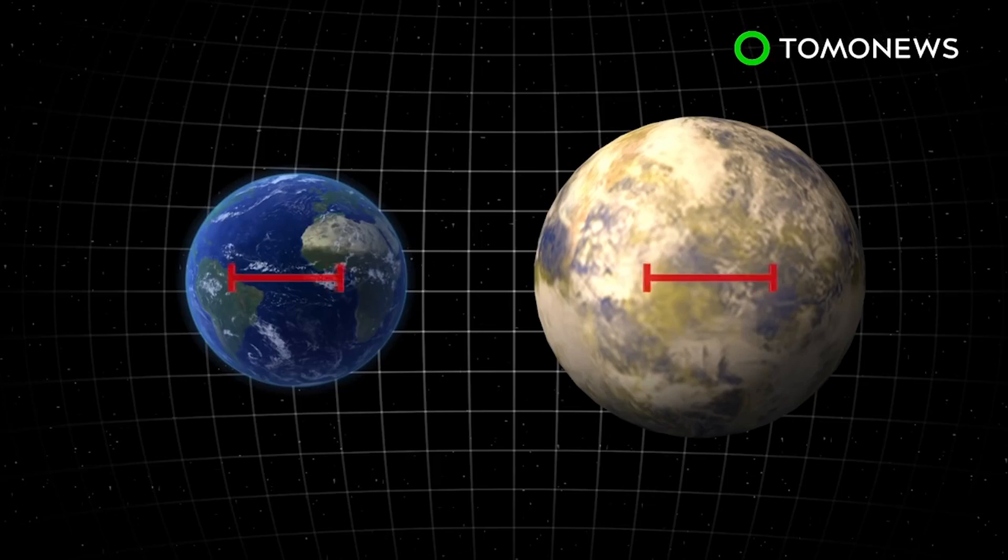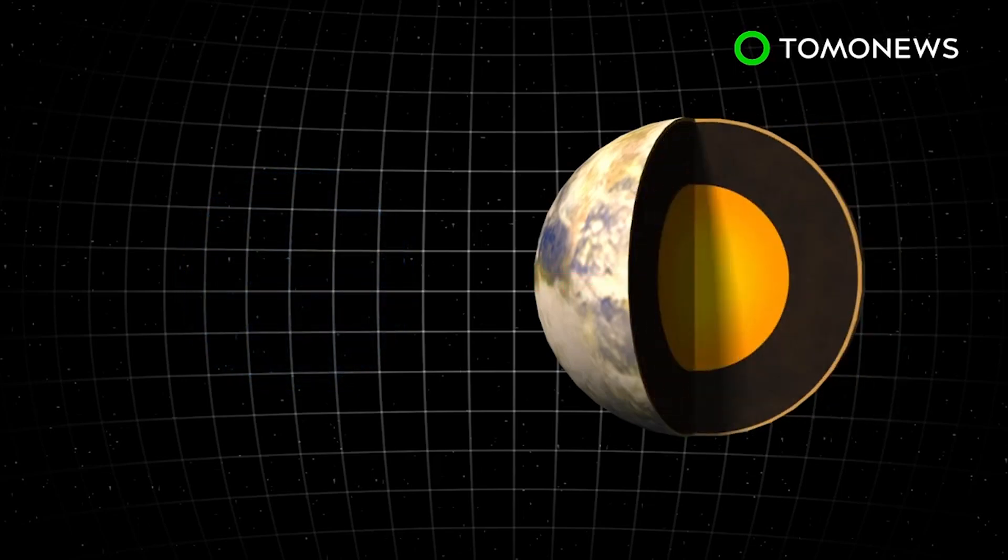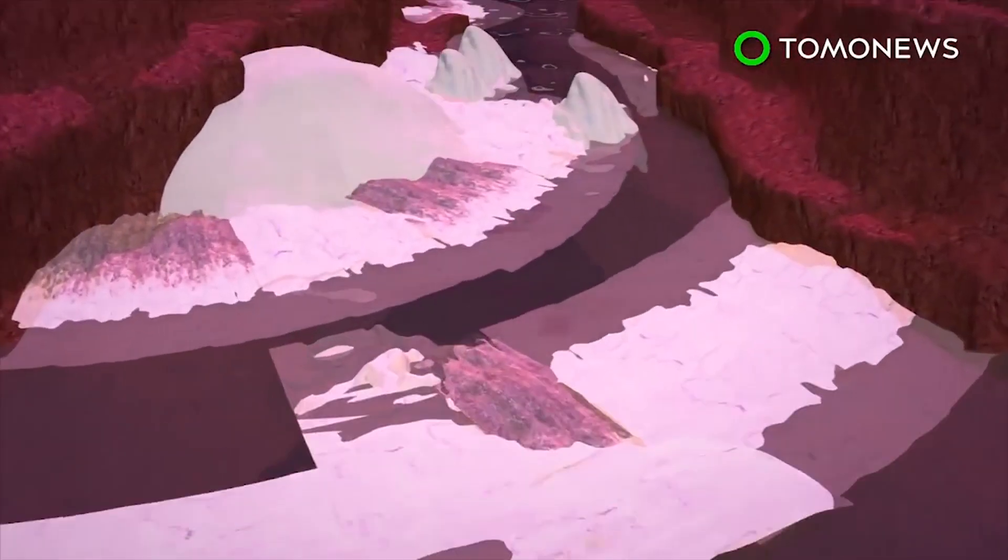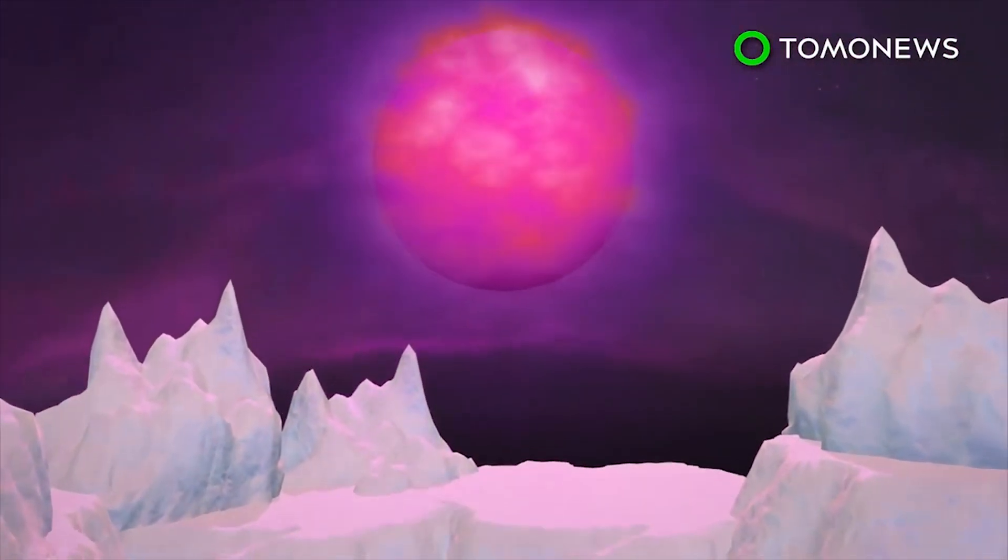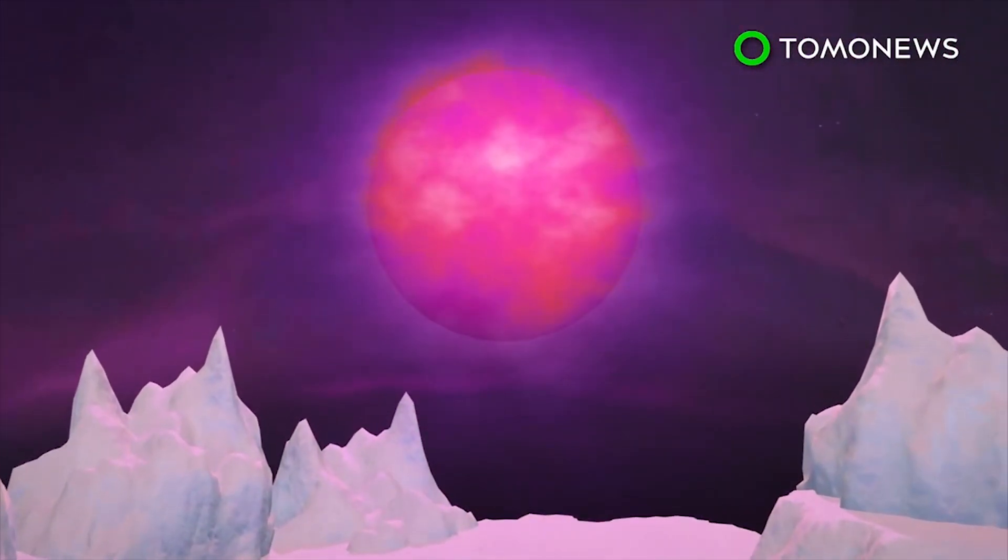LHS-1140b is 1.4 times the size of planet Earth, but is almost 7 times heavier, indicating that it's likely composed of rock and an iron core. It's because of this density that researchers believe the planet may be robust enough to endure the radiation and still hold water.